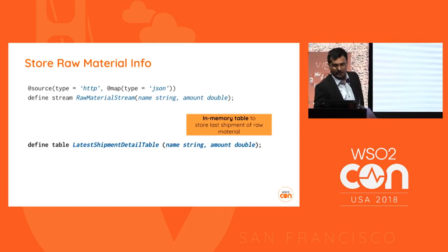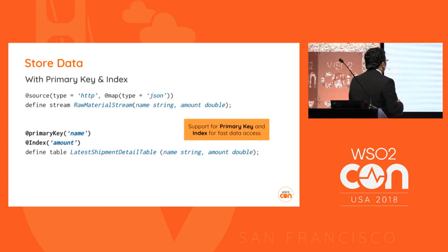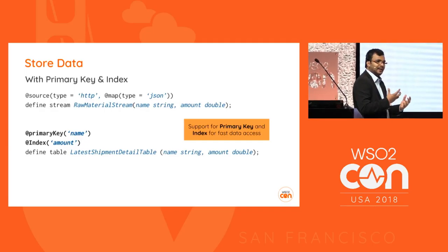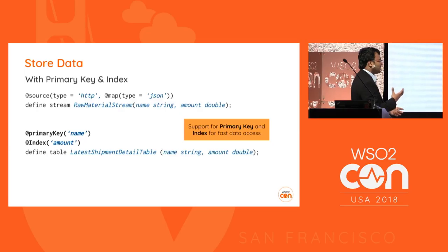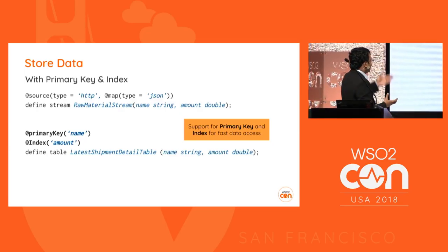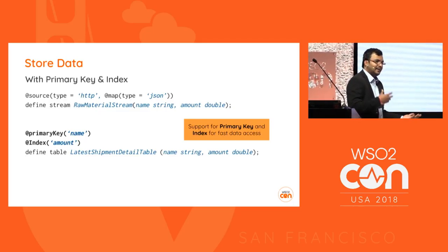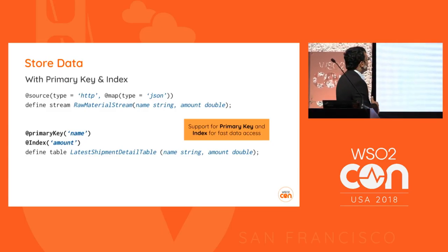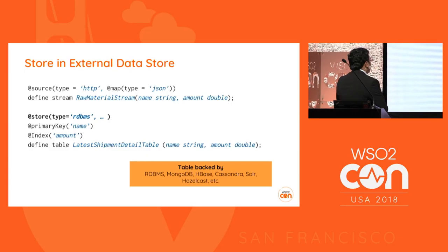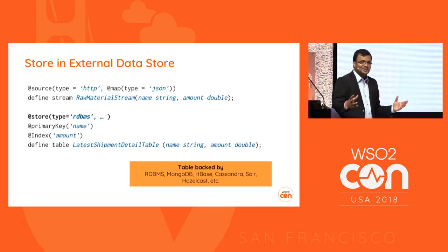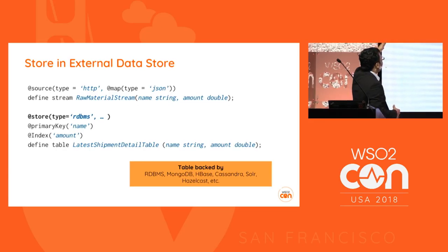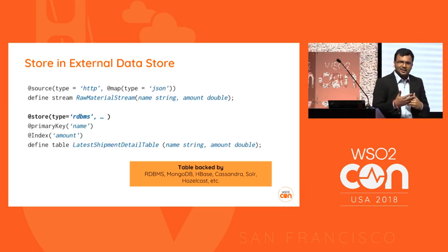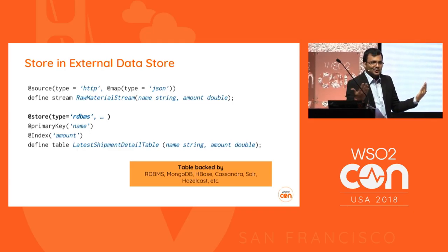To improve performance for data manipulation, we use 'name' as a primary key and also index 'amount.' In a real case, you'd index attributes used for searching. If you want to use an external data store or database for persistent storage, you can use RDBMS event store with an @store annotation to bind the event table to the external store.